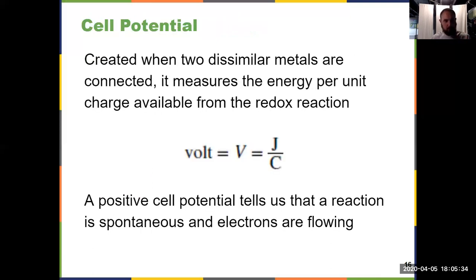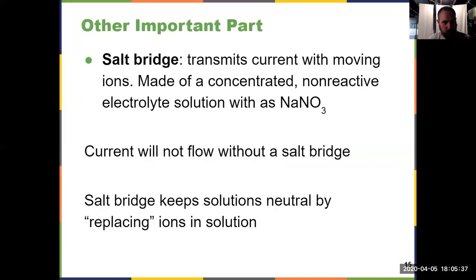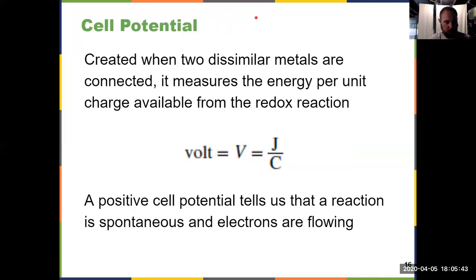So cell potential, cell potential is what we see. If I jump back two slides here, what we see on the voltmeter here is a cell potential. Cell potential is created when two different metals are connected. It gives us some information about the energy per unit charge available from the redox reactions that are happening in my two half cells. It's measured in volts, which we said before, symbol V, joule per coulomb. A positive cell potential, and this is a key idea, you want to jot this down in addition to all the definitions we've already covered. A positive cell potential tells you that a reaction is spontaneous, and electrons are flowing. Your galvanic cell is working.